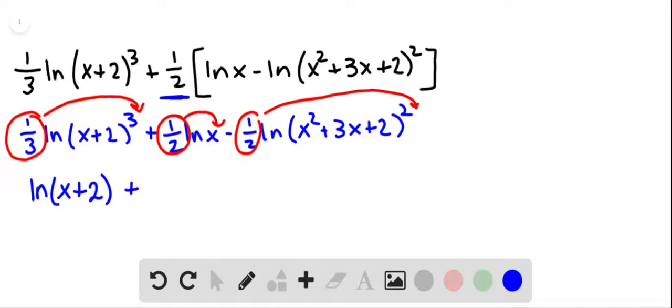For the next one, we are bringing up the 1 half, and so we are going to have x to the 1 half power. We can write x to the 1 half power as square root x.